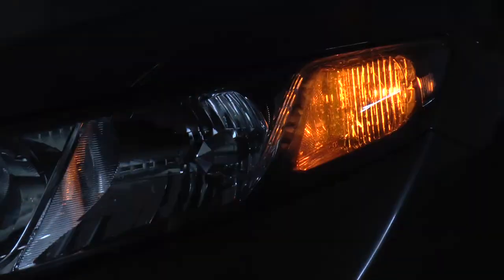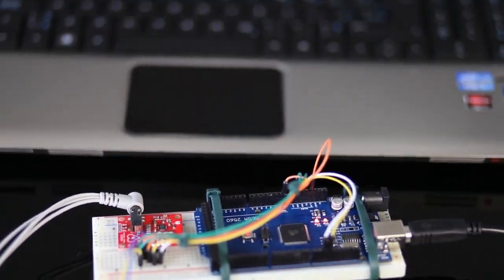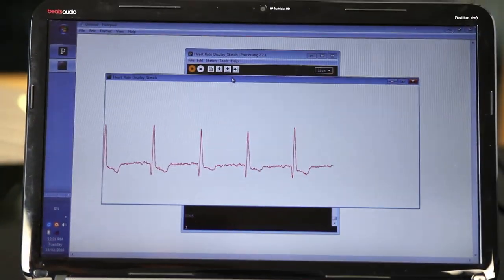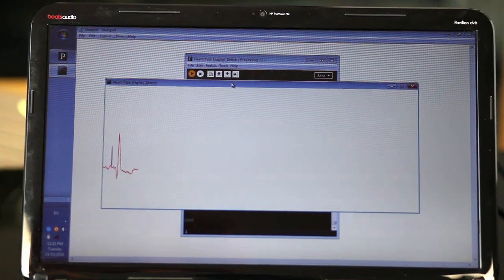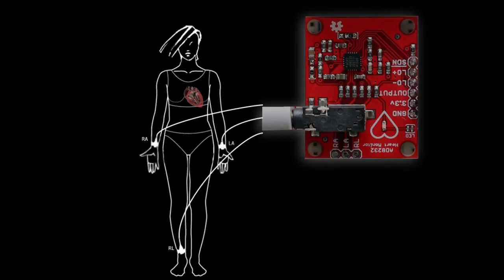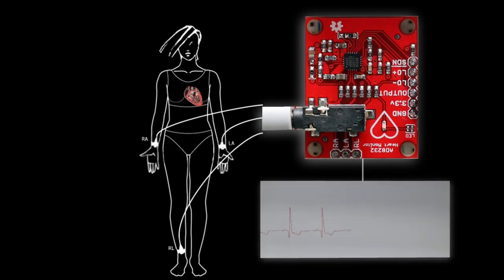The blinking turn signal on motor vehicles is also generated by relaxation oscillator, as the membranes of living cells act like charged capacitors. One of the differences between capacitors and membranes is that capacitors can be charged and discharged much faster than living cells.